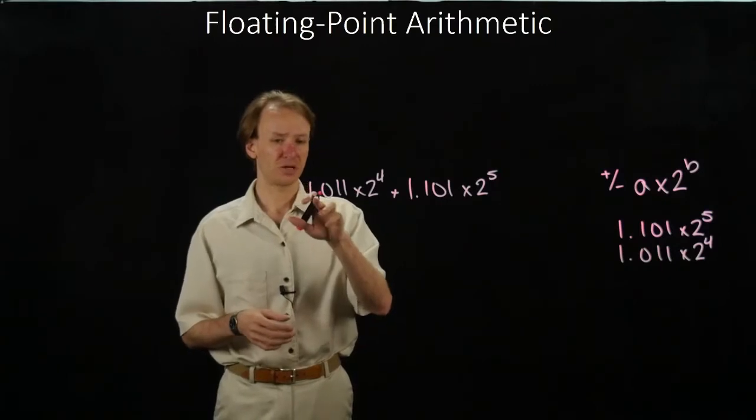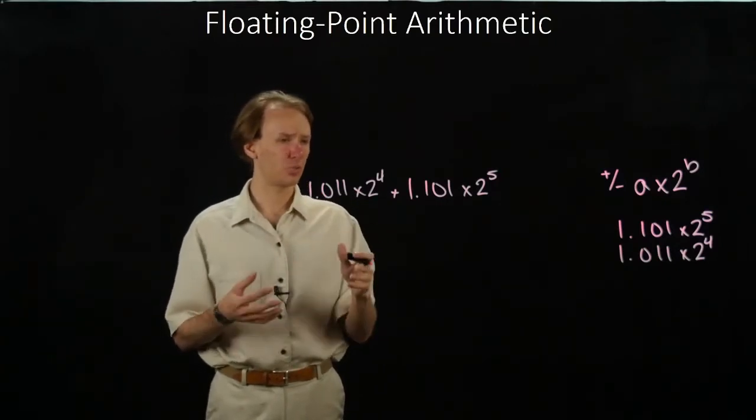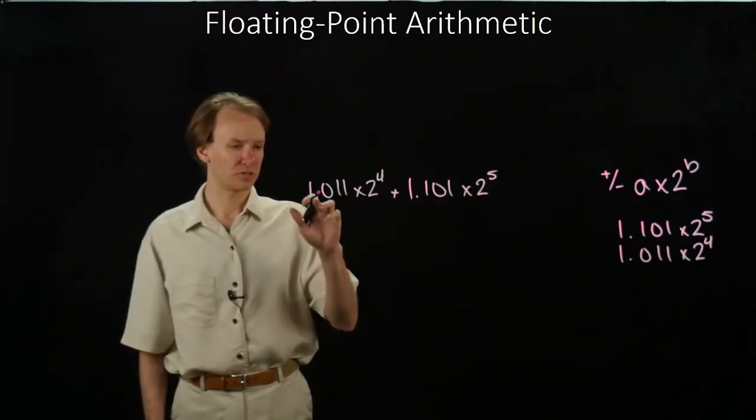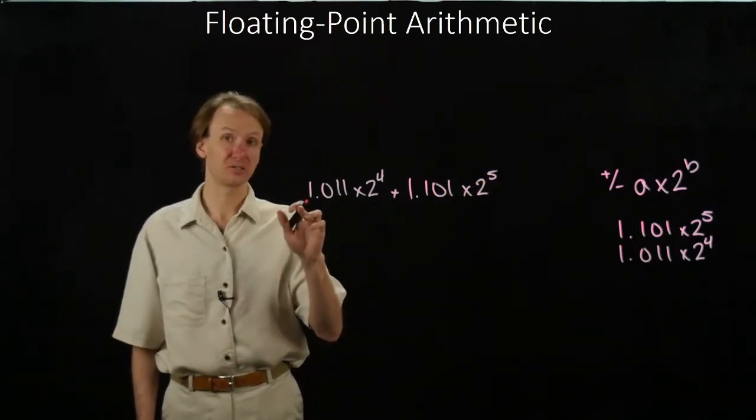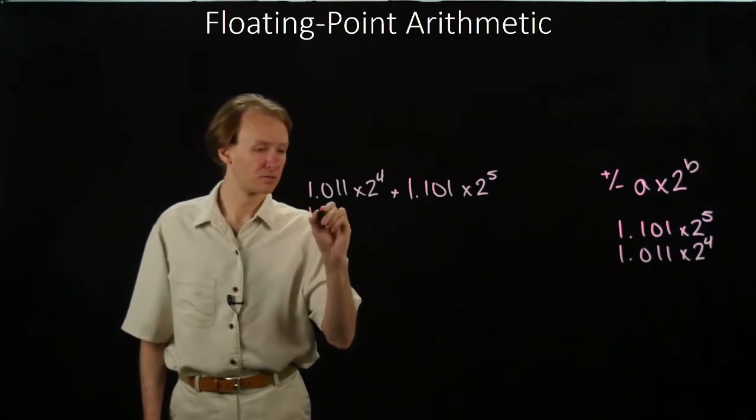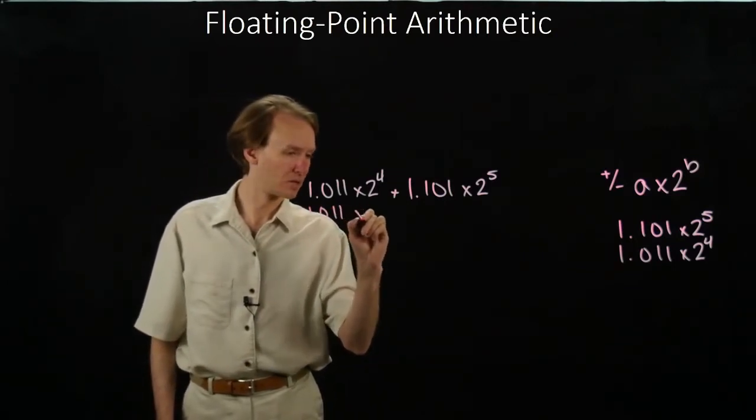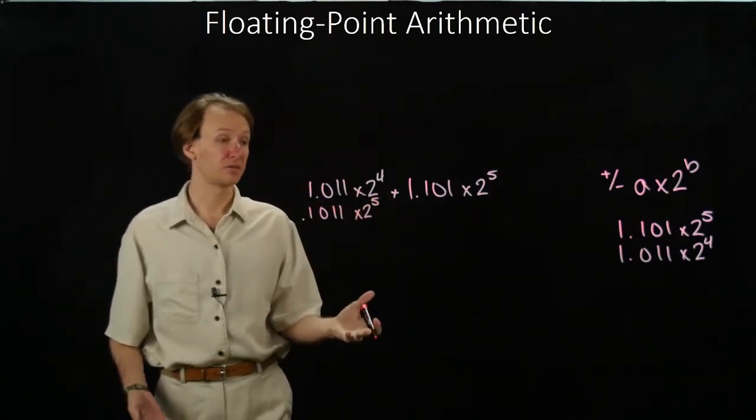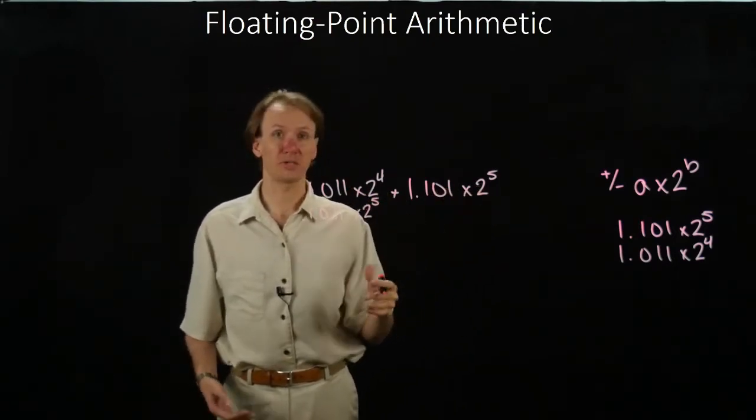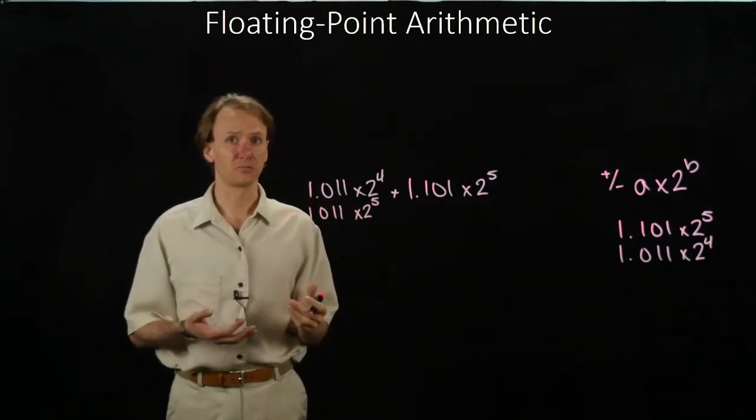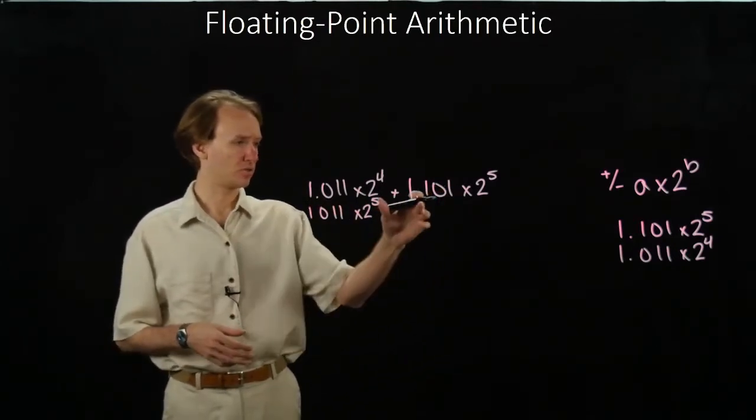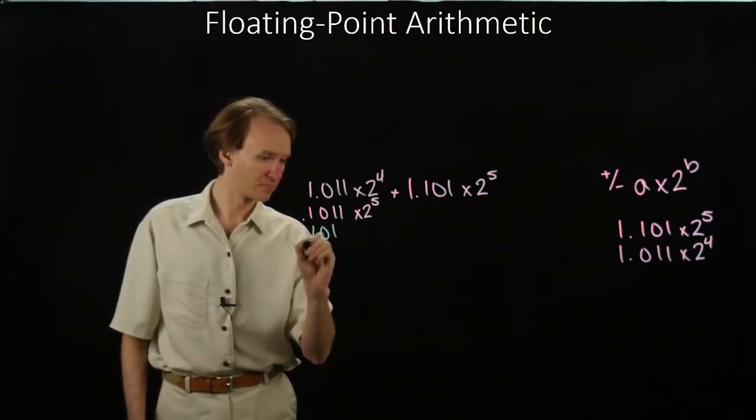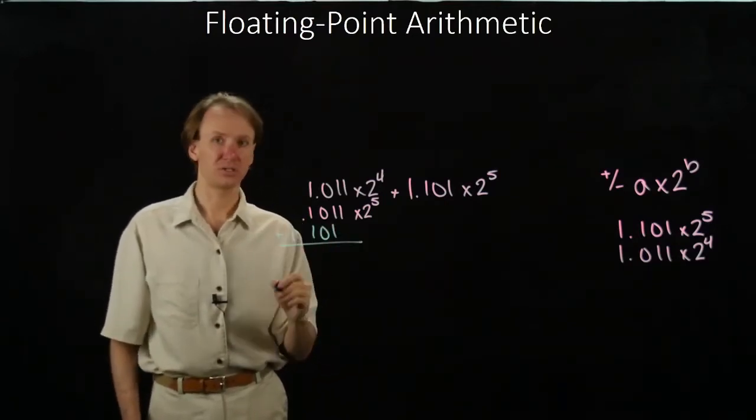So I'm going to shift the binary point in this number in such a way that this exponent should equal this one. That will mean shifting the binary point one place to the left. Now I have something that's in terms of 2 to the fifth, so now they have a common term and I can add them together. So now I'll align my two significands with the binary point and just add them together.